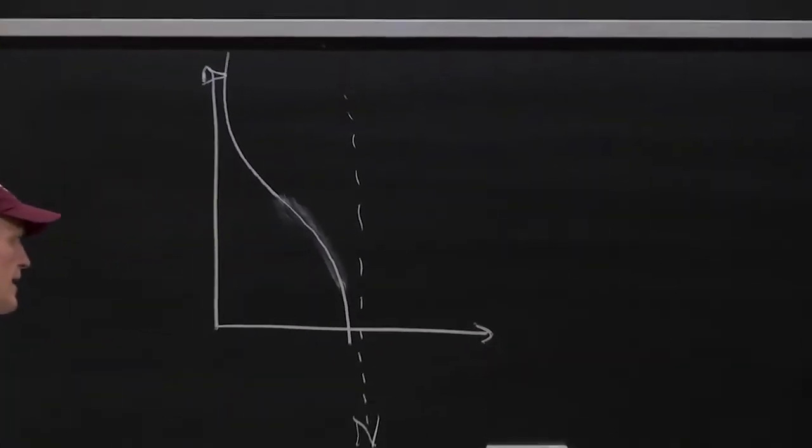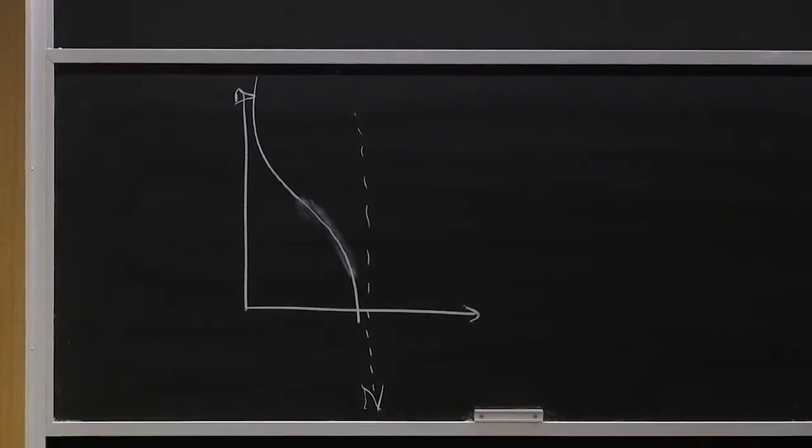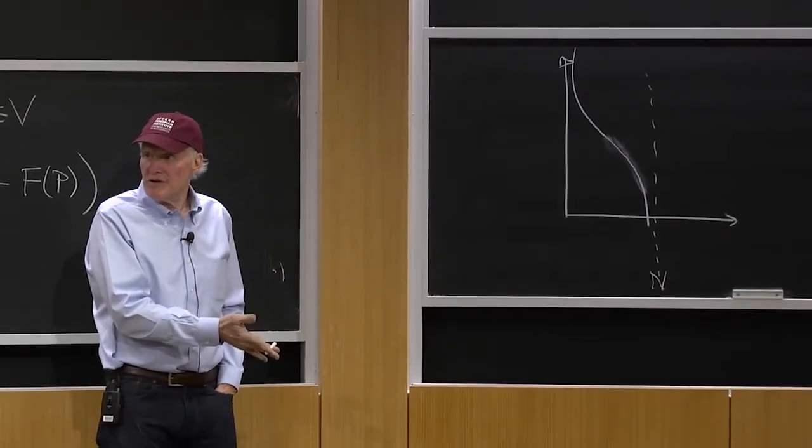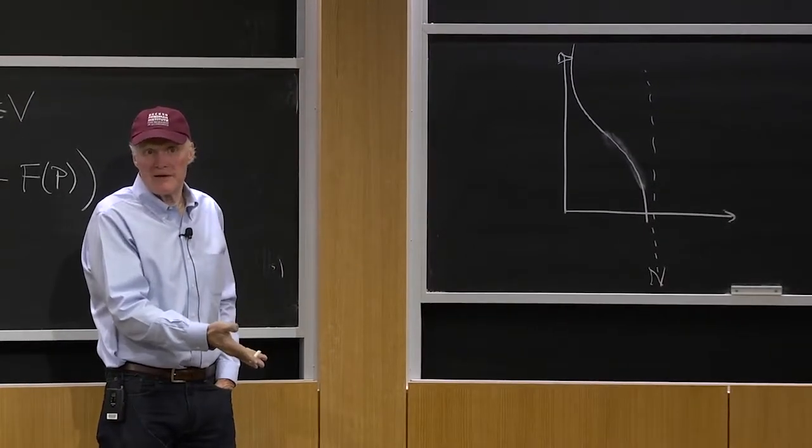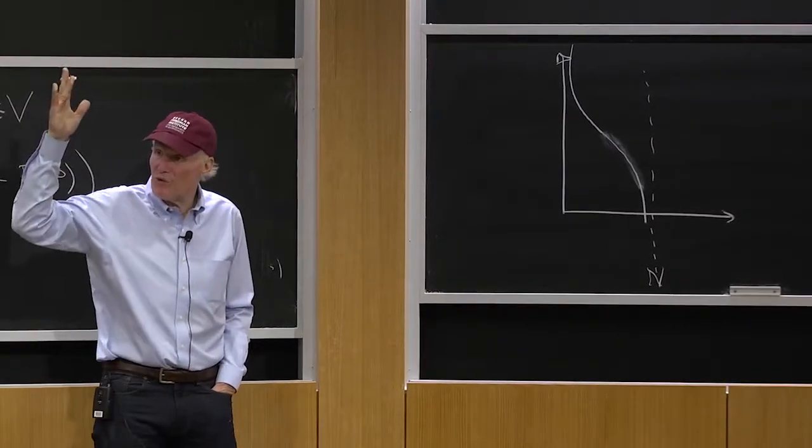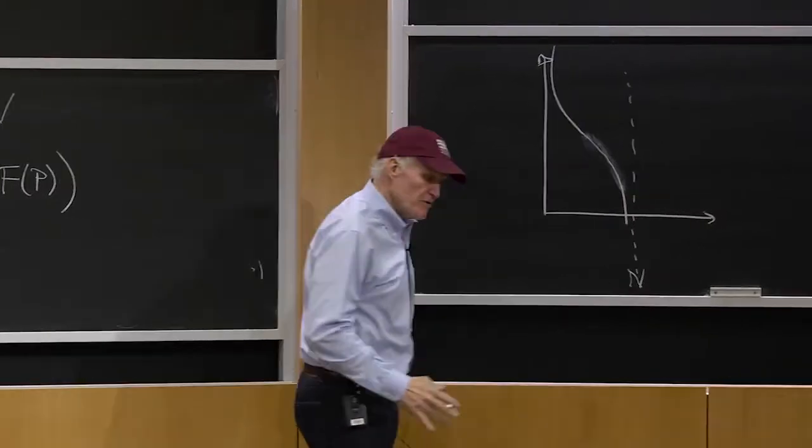It would be asymptoting to N. And if it was normally distributed, some guys would actually have negative v's, of course, which means they don't like the product. You know, if you don't like a normal distribution, you could take a log normal or any other cumulative you want.